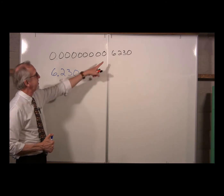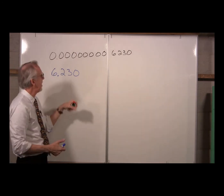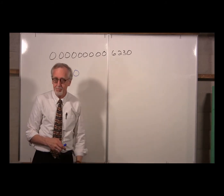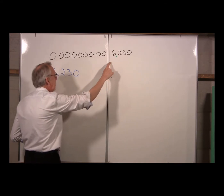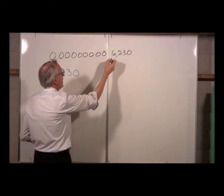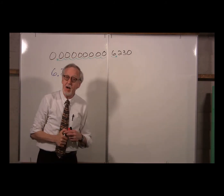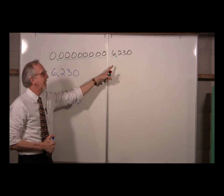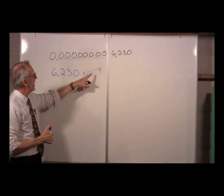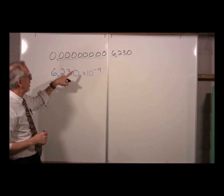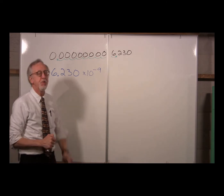Back to the problem: 6.230. We've got to move that decimal point back to the original place. Obviously 6.230 is not the same size as 0.00000000006230. We need to move the decimal point back - counting the places: 1, 2, 3, 4, 5, 6, 7, 8, 9. We need to move it 9 places, but this time to the left, making the number smaller. So we multiply by 10 to the negative 9. We write this as 6.230 times 10 to the negative 9.